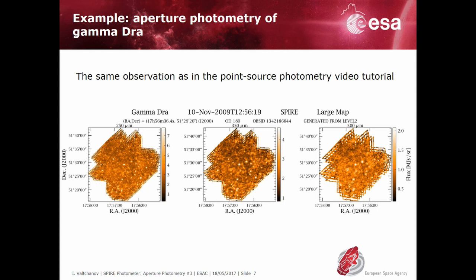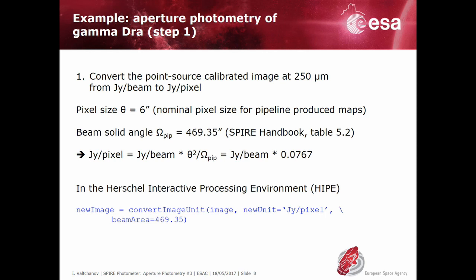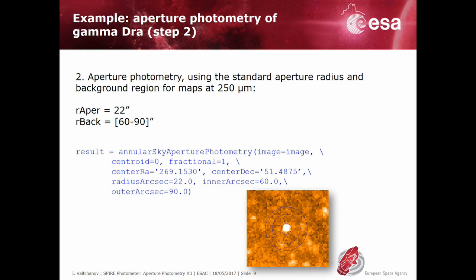In the following example we are going to use the point source calibrated map at 250 microns to measure the flux of Gamma Draconis. The first step is to convert from Jansky per beam to Jansky per pixel. One can do this by using the known beam solid angle and the pixel size of the 250 micron map. This can be done easily by using the Herschel Interactive Processing Environment, or HIPE, task called Convert Image Unit, as shown in the code snippet in blue.